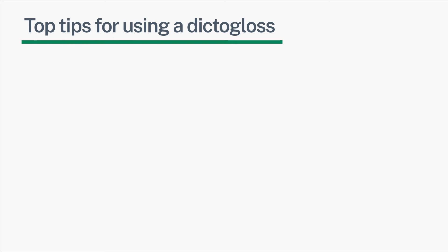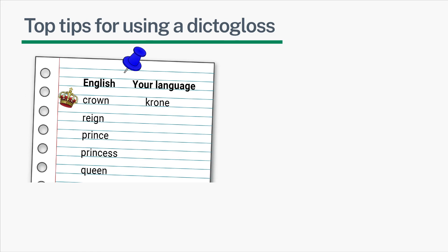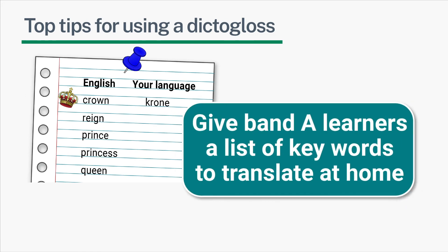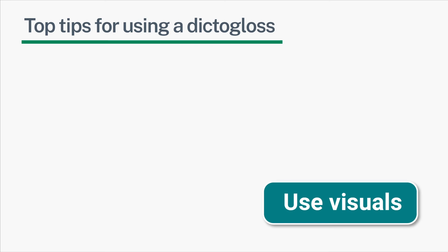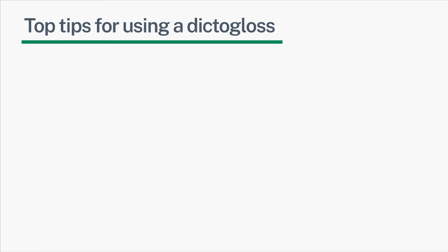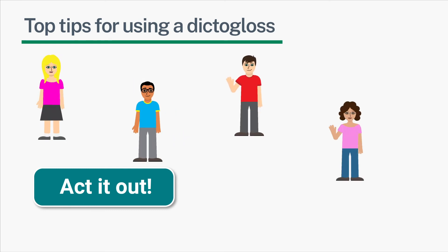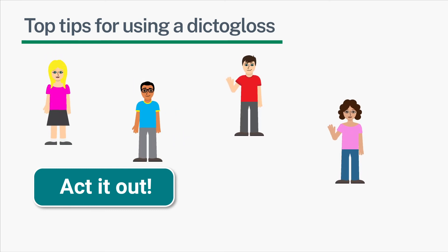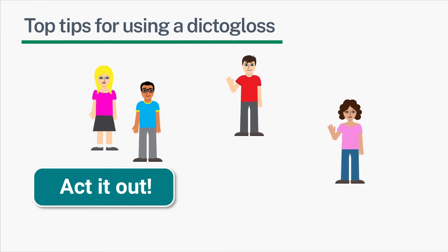Top tips for using a dictogloss. For learners who are new to English or at the early acquisition stage, you might want to give them some of the key vocabulary to translate at home before the class. Using visuals or even graphs and charts while you're speaking can provide extra support for both lower level and more advanced learners. You might also get pupils to act it out the first time they hear it instead of making notes, which might be particularly good for younger learners.